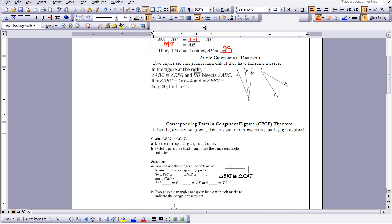So we have this example here that we're going to work through using this theorem. We know that angle ABC is congruent to angle EFG. So this is congruent to this whole angle.